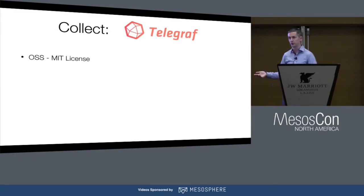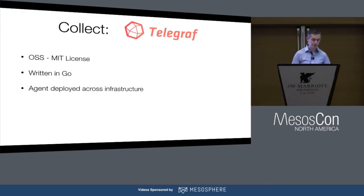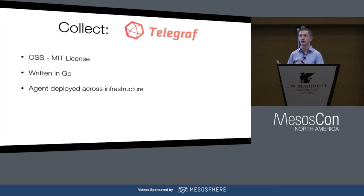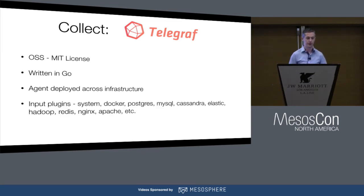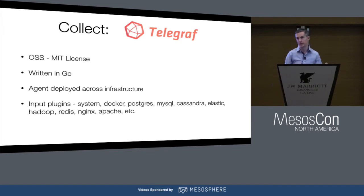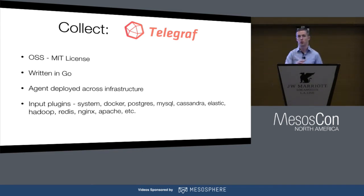Telegraf is the agent — also open source MIT licensed, written in Go. It's basically an agent that you'd deploy across your entire infrastructure on every single host. It can collect system metrics, but also metrics for well-known services. We have about 100 input plugins at this point, most of which are actually contributed by the open source community. As the agent matures, it means there are more pieces of your infrastructure you can get visibility into.